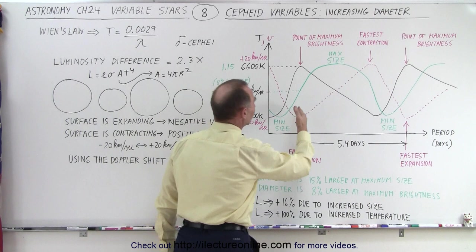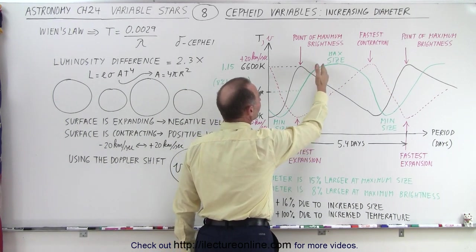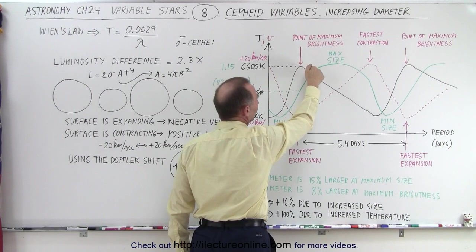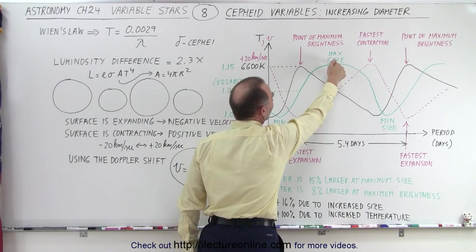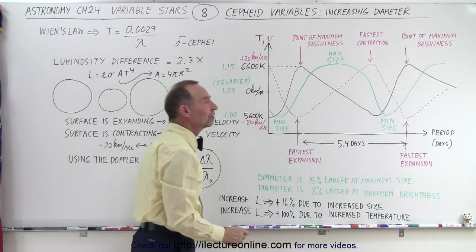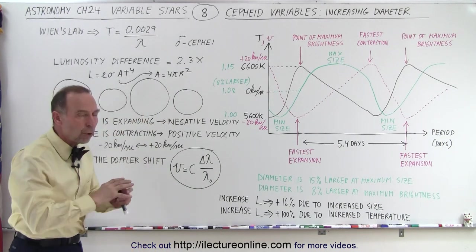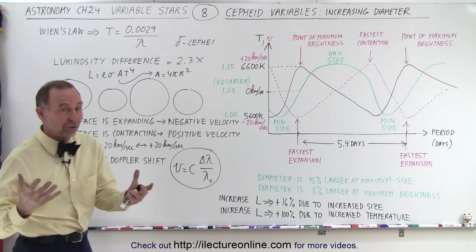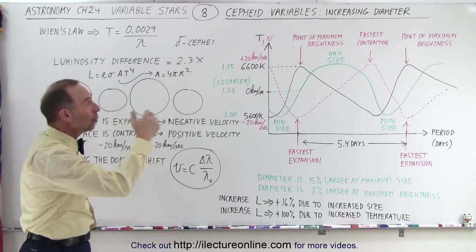But also notice that the size continues, the star continues to get larger and larger, well beyond the point of maximum brightness. The star is already diminishing in brightness before it reaches the maximum size. So we're going to show you in the next video why that is. What is the mechanism inside the star, which is really the interesting part that makes it do all that.